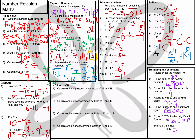Question number 7: estimate. Whenever you see the word estimate, always round to one significant figure. So 72 goes to 70, 362 goes to 400, and 0.49 goes to 0.5. On the top: 7 times 4 is 28, and with the zeros that gives 28,000. Divided by 0.5 — dividing by 0.5 doubles your answer — so the answer is 56,000.